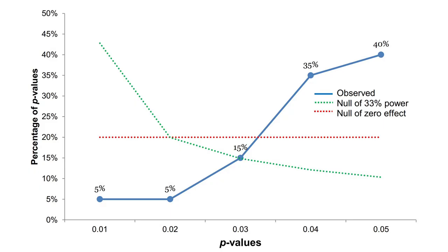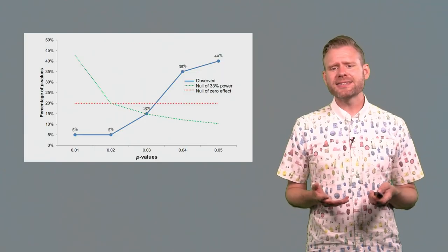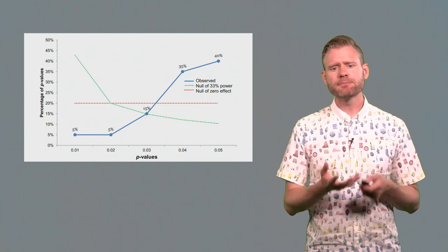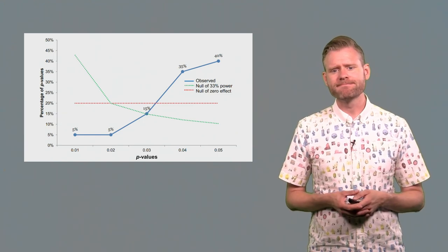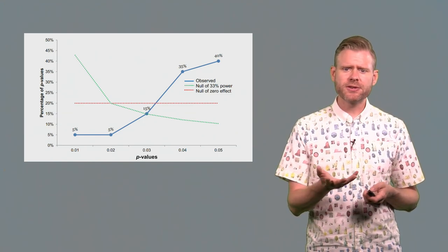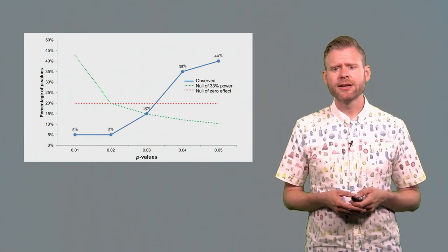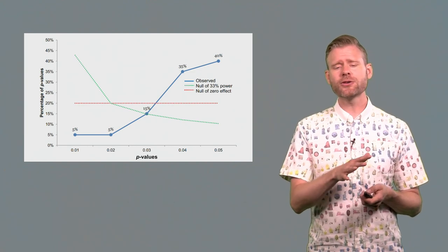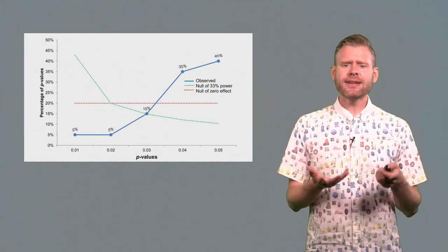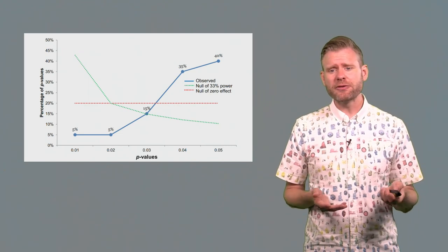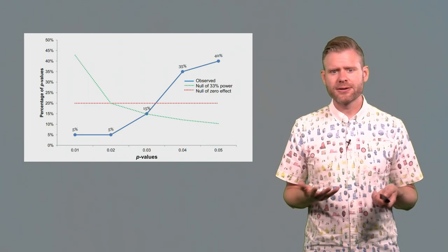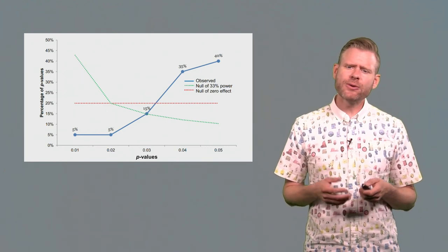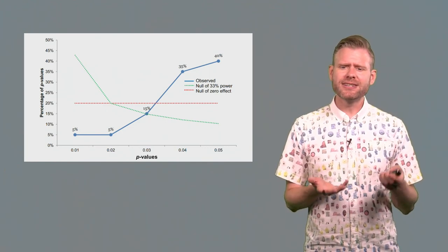Another bias detection technique is known as p-curve analysis, and I also discussed this technique in my previous MOOC. It's based on a meta-analysis not of effect sizes, but of p-values, and it plots the p-value distribution. It compares the observed p-values, here represented by the blue line, with the p-value distribution that you would expect if there is no true effect, here the horizontal red line, and a p-value distribution you would expect if there is a true effect with at least some power, represented here with the green line. Now we can see that the p-values are very peculiarly distributed. We see quite a lot of p-values that are just below 0.05, which is actually a real indication that some bias is present.